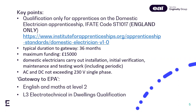To undertake the EPA, the apprentice will need to achieve English and Maths at Level 2 and the mandated electrotechnical in-dwellings qualification. The EPA and the Level 2 English and Maths are outside the dwellings qualification and are additional components as part of the apprenticeship.